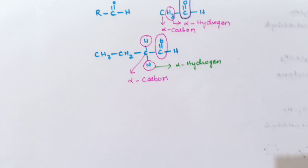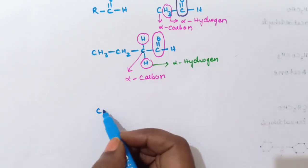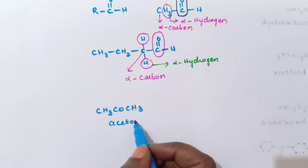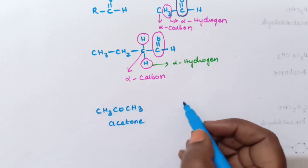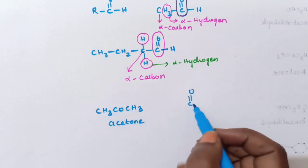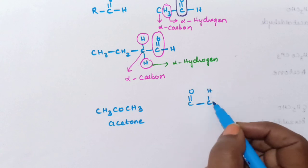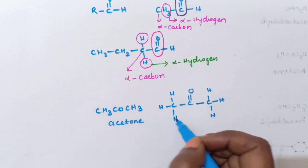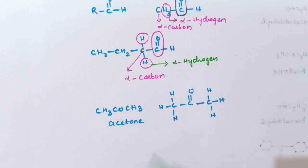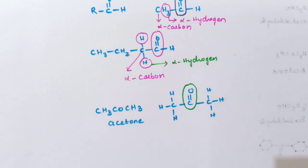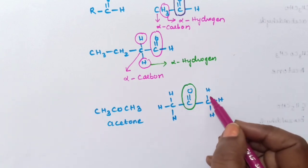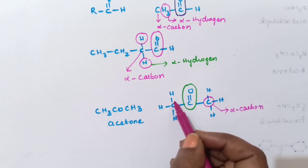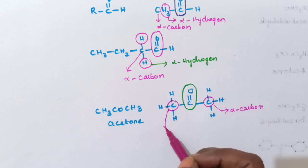Next we will see one example for ketone. CH3-CO-CH3 — this is acetone. The structure can be written with C double bond O in the center, with CH3 on each side, each having three hydrogens. This is the carbonyl carbon. The carbon next to this carbonyl carbon on the right side is called as alpha carbon. Similarly on the left side, that carbon is also called as alpha carbon.